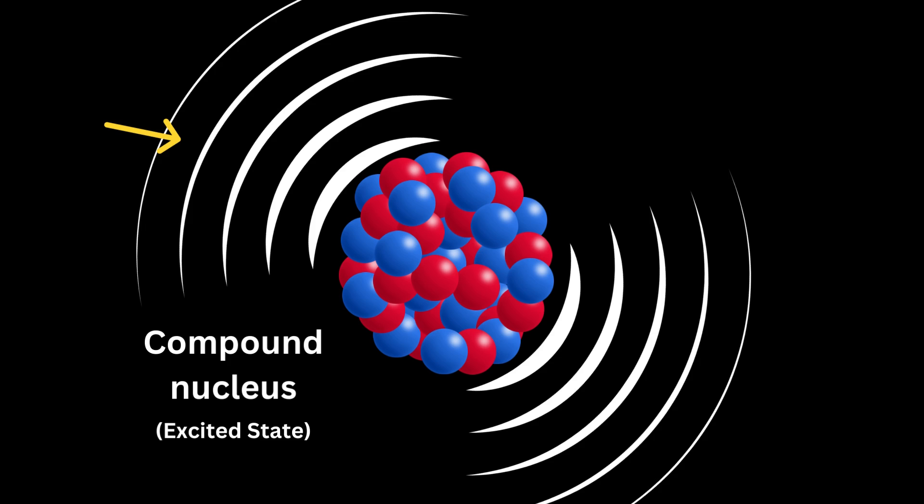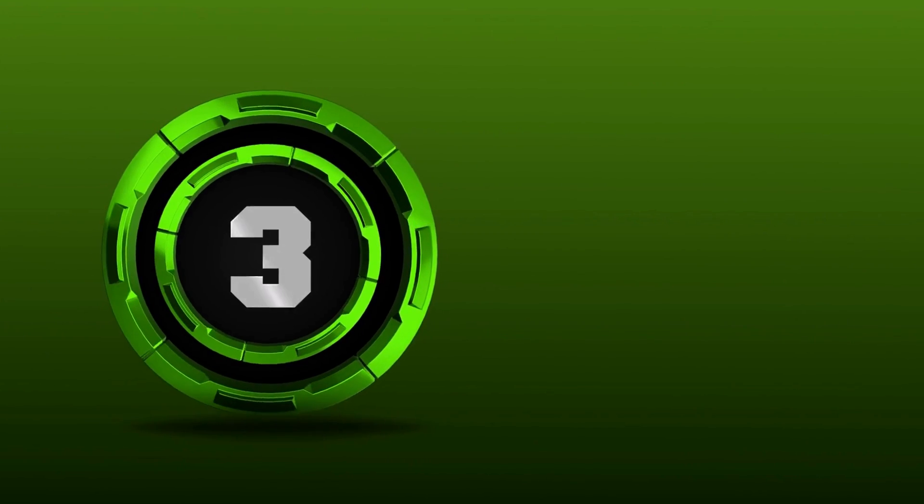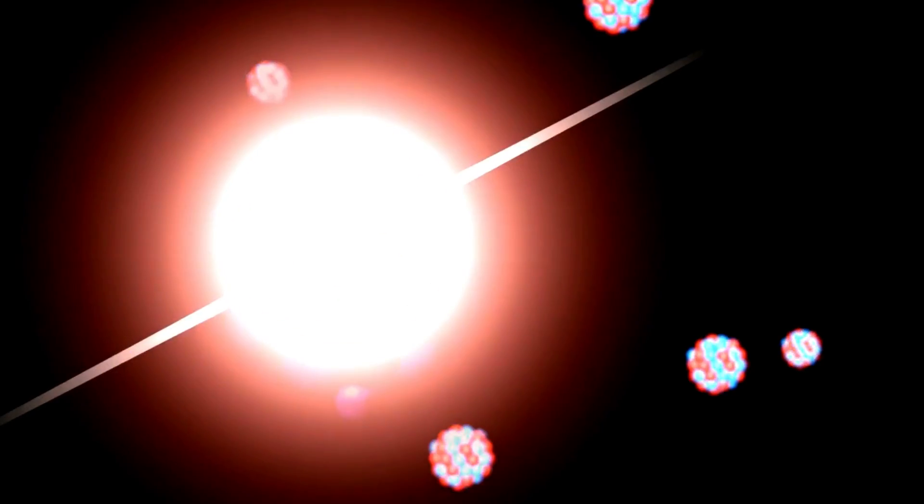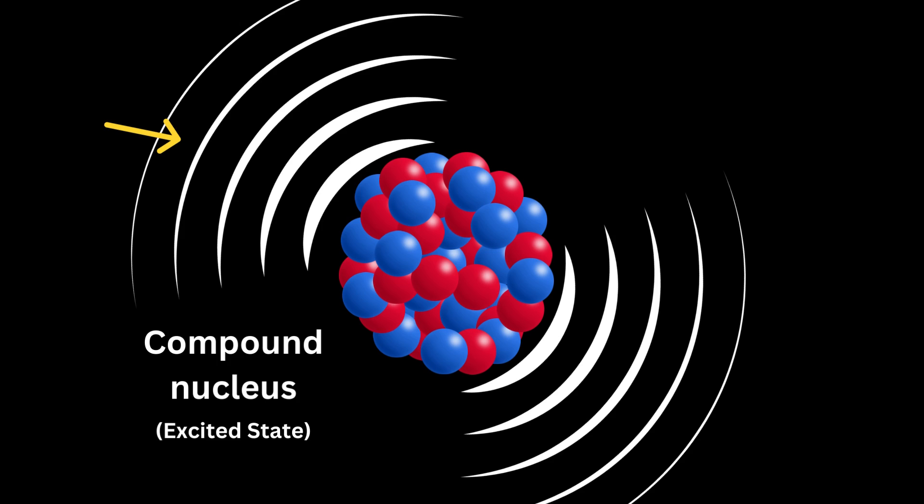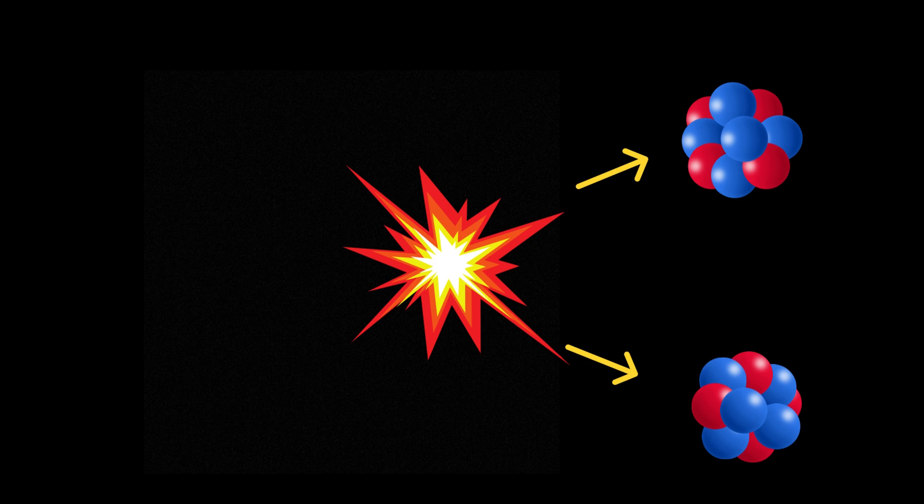Step 3: Nuclear fission. The highly energized compound nucleus divides into two or more fission pieces, which are smaller nuclei known as fission fragments. These pieces typically differ in size and have a variety of atomic masses.